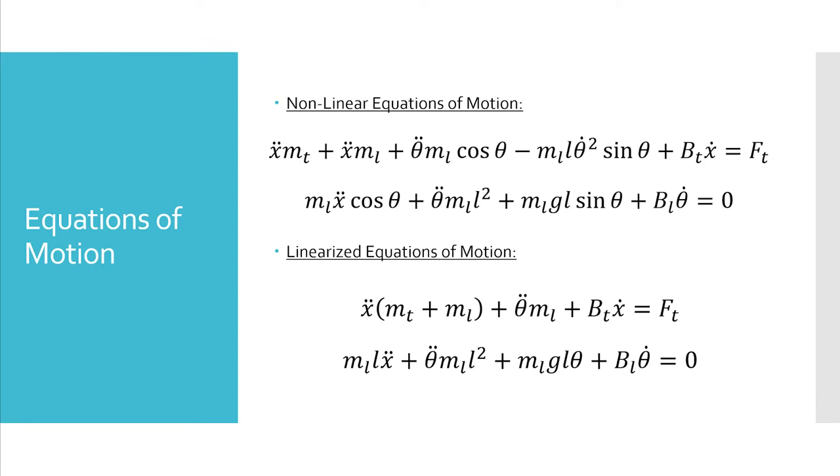Two sets of equations of motion were derived to describe the system. The top equations represent the nonlinear interpretation of the two-dimensional overhead crane motion, while the bottom equations represent the linearized version of the system. The remainder of the calculations and simulations used throughout this presentation utilize the linearized set of equations.